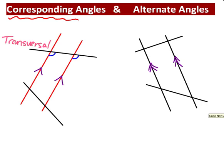Those two angles correspond to each other. This angle over here corresponds with this one because it's a mirror image. Whatever is going on on this parallel line, if it happens over on this parallel line, then it's corresponding. So those two green ones are corresponding and they're equal. Over here, if I took this angle now, that corresponds to that one. And this angle here corresponds to that one - a mirror image.